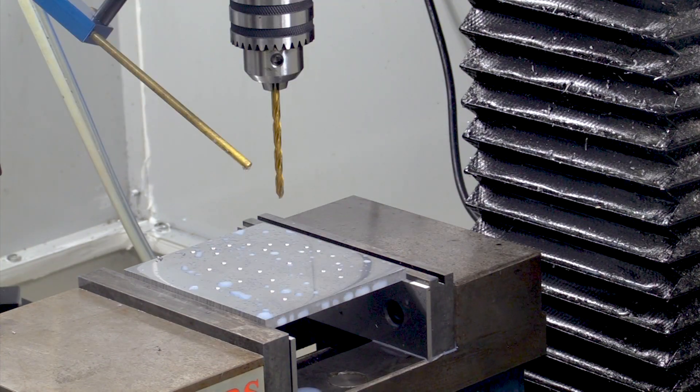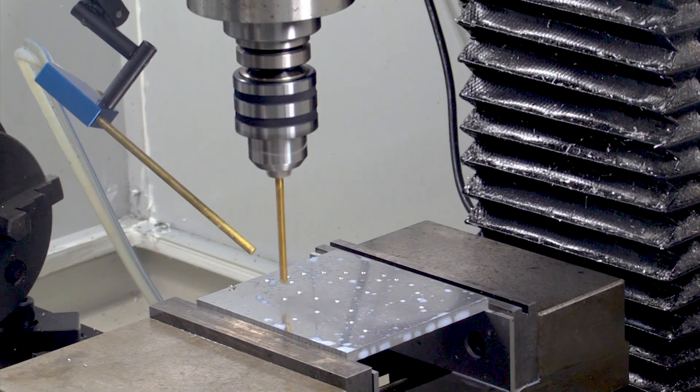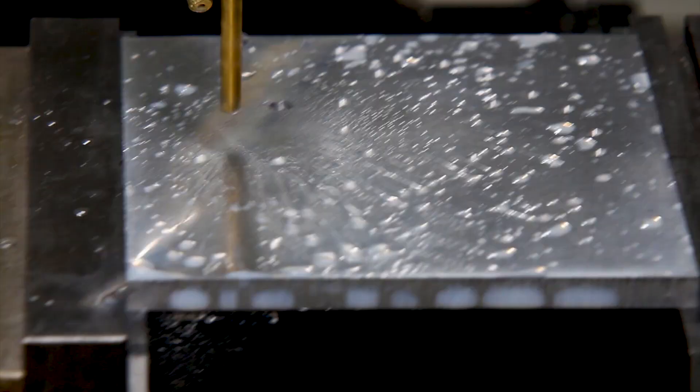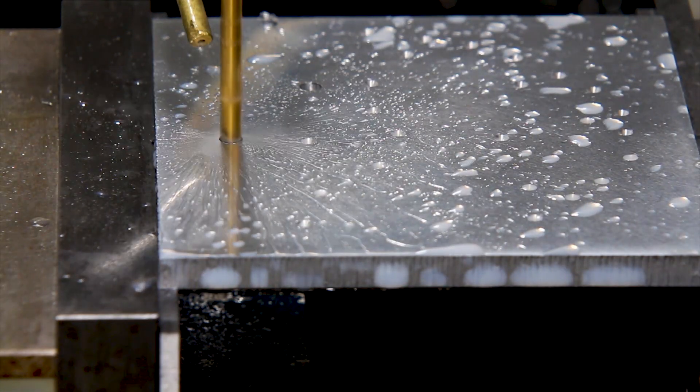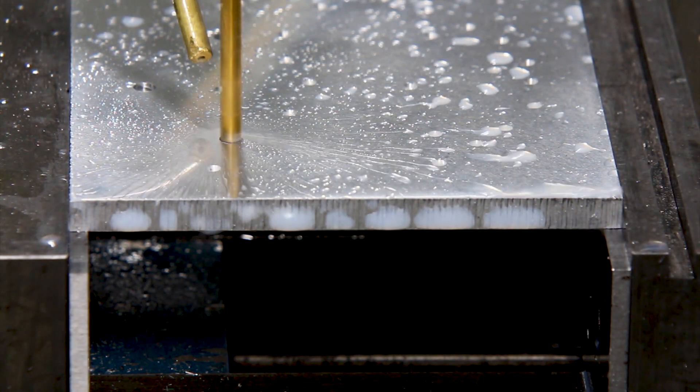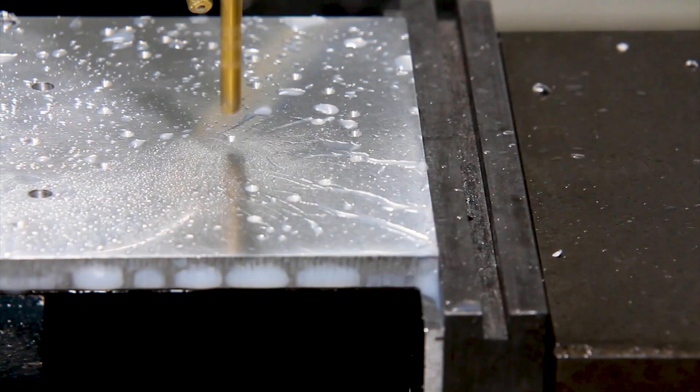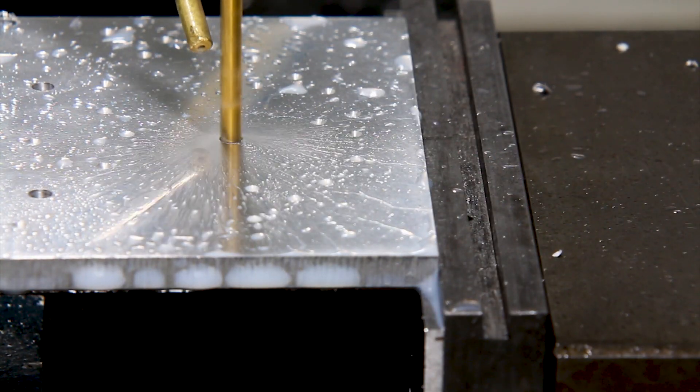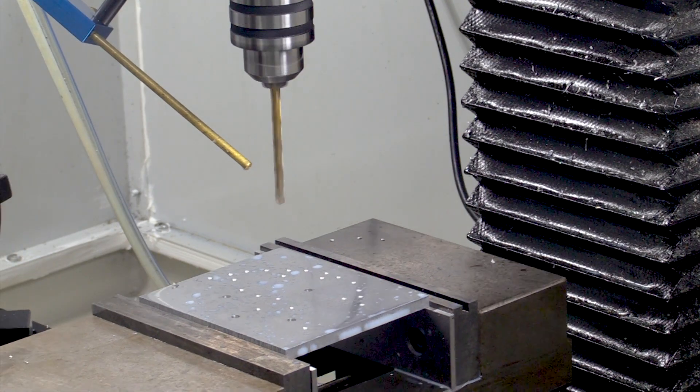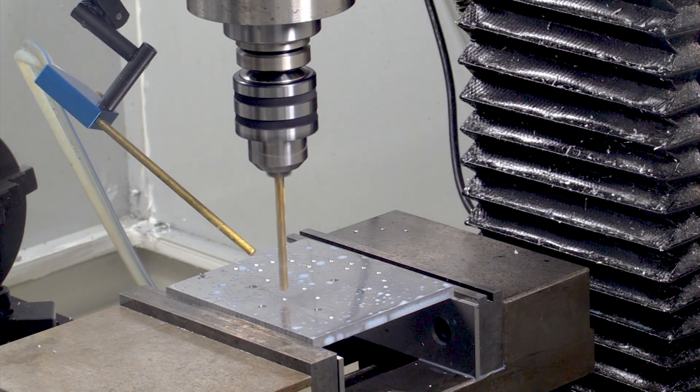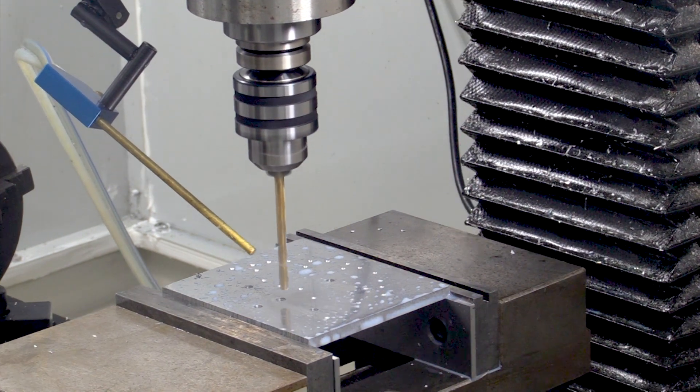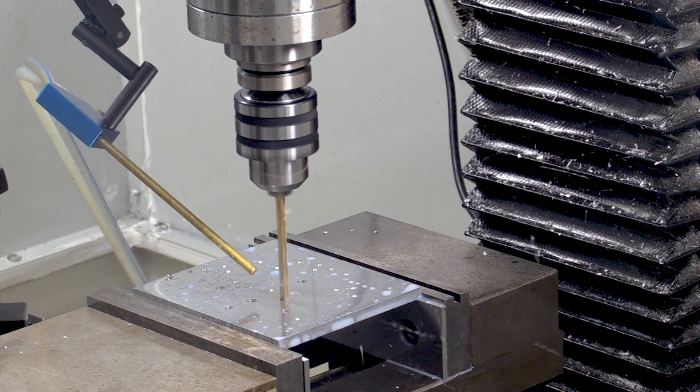Next I'm going to drill the holes that are later going to be countersunk to connect to the forearm pistons. And now I switch drill bits and drill the remainder of the holes. Most of these are to guide the cables down through the arm and into the servos.